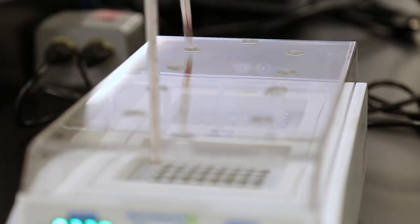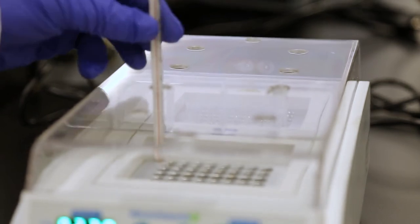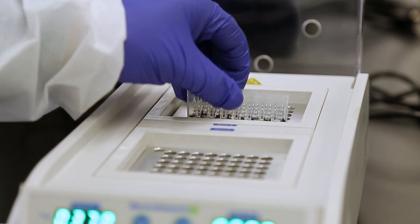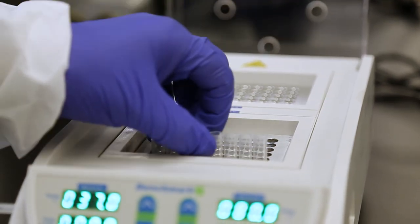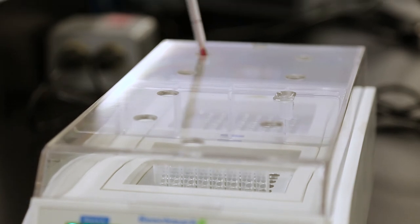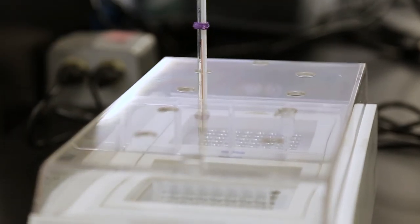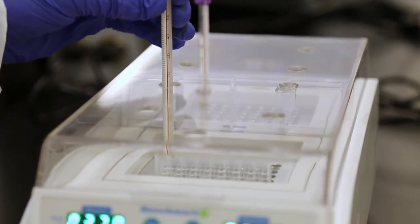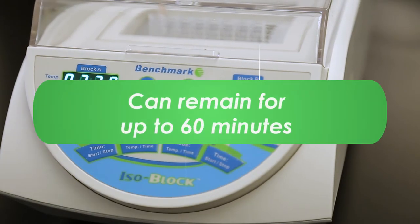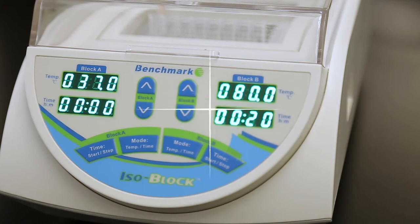After the 10-minute incubation is complete, remove the thermometers if you placed them back in and immediately open the lid and move the cluster tubes to the 80 degrees Celsius block. Close the lid and if you like return the thermometers. Then start the block B timer you set to 20 minutes. Note, the cluster tubes can remain in this block for up to 60 minutes.